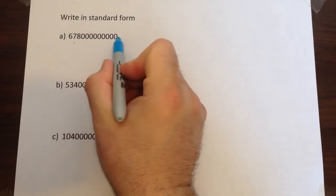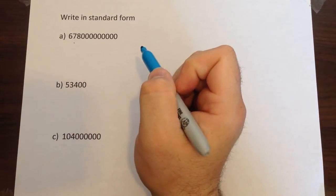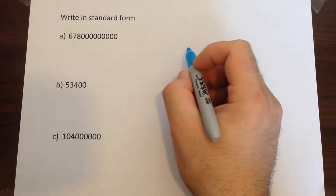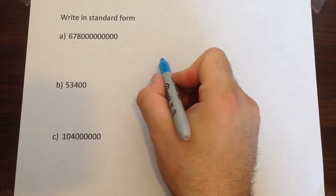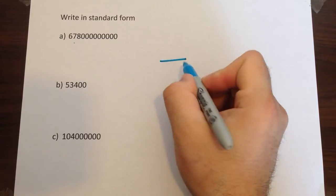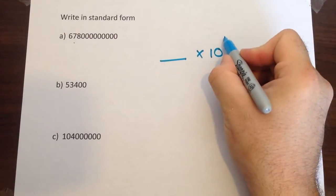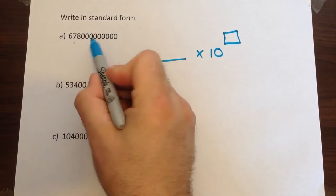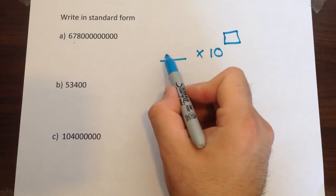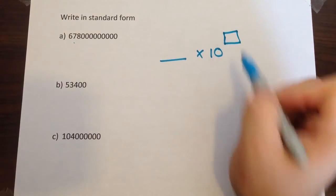This time we're going to look at converting an ordinary number into standard form. Now a standard form number has essentially two parts. It's got a number which has got to be less than 10 and it's multiplied by a power of 10. So to get from this type of number to this type of number you've got to have a number less than 10 and a power.